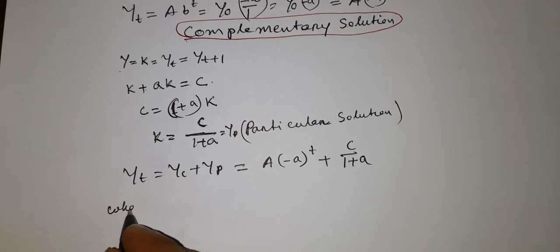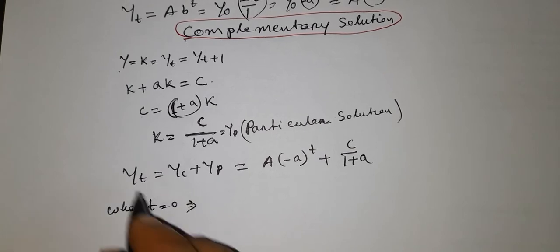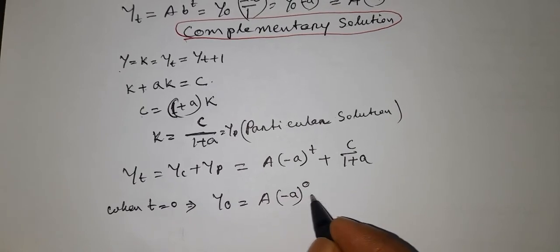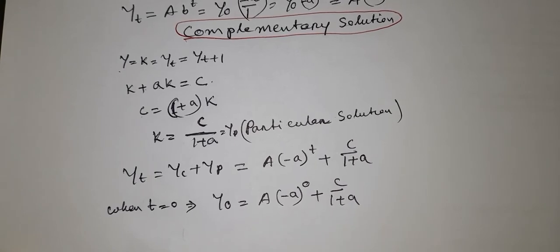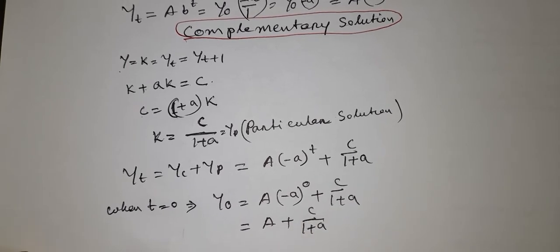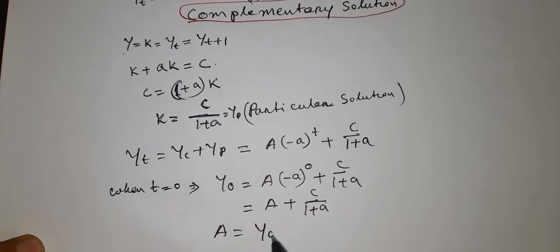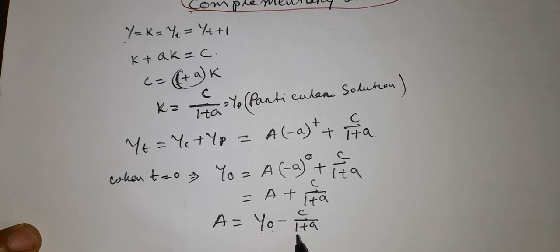When t = 0, then y_0 = A · (-a)^0 + c/(1+a) = A + c/(1+a). So A = y_0 - c/(1+a). Instead of A, we can write y_0 minus c divided by 1 plus a.